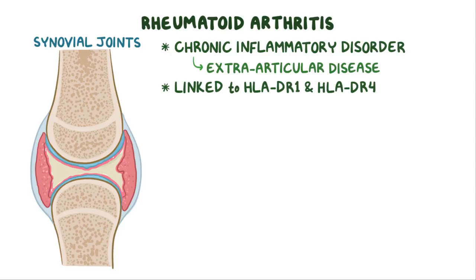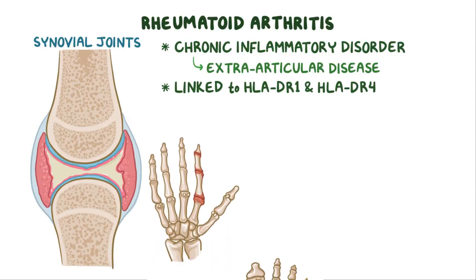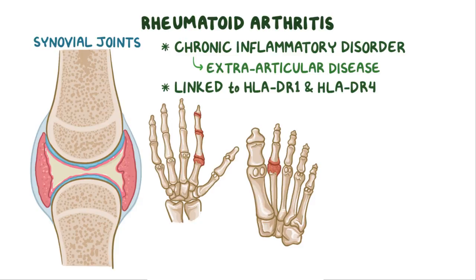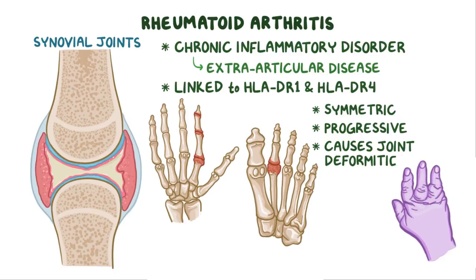The pannus can damage cartilage and other soft tissues, and also erode bone. Typically, rheumatoid arthritis affects at least three joints, generally ones in the hands and feet. The disease tends to be symmetric, progressive, and over time it causes joint deformities like crooked fingers.